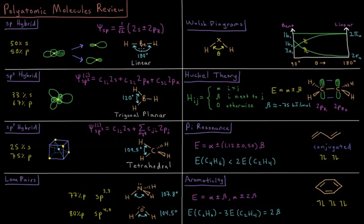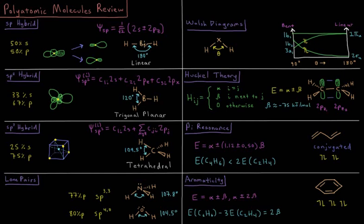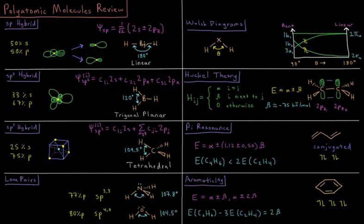When we have something like BeH2, we want to have the valence orbitals of our central beryllium atom pointing out optimally towards our external bonding atoms and also orthogonal to one another.